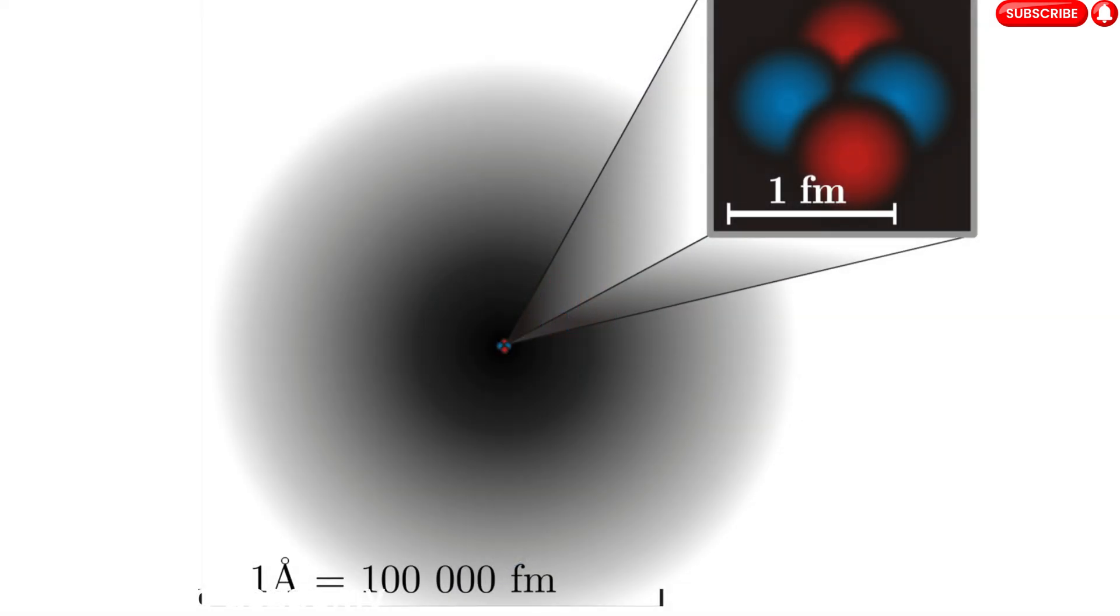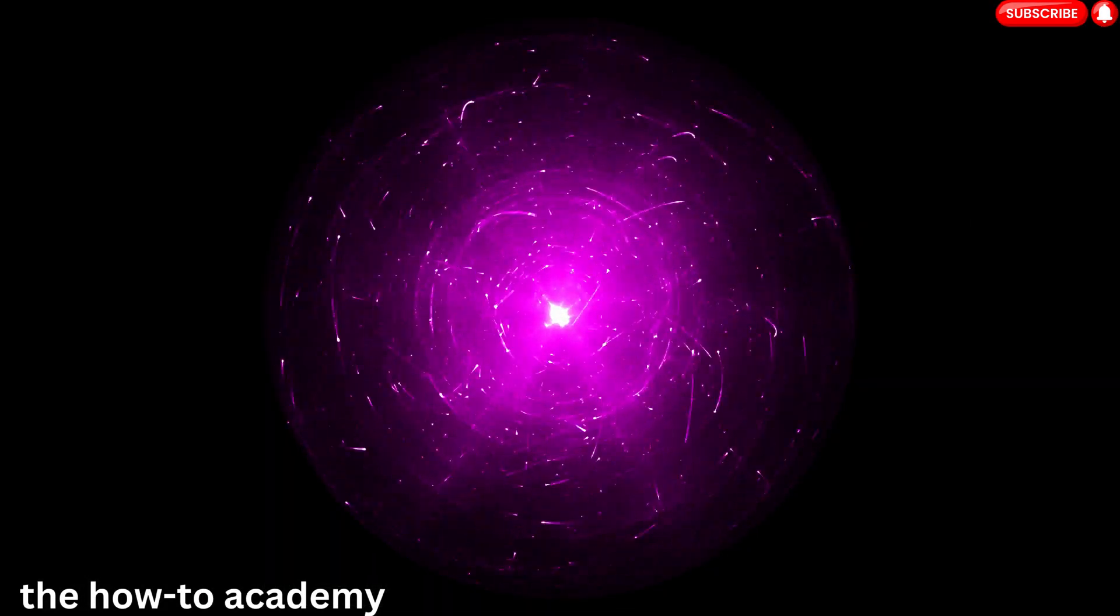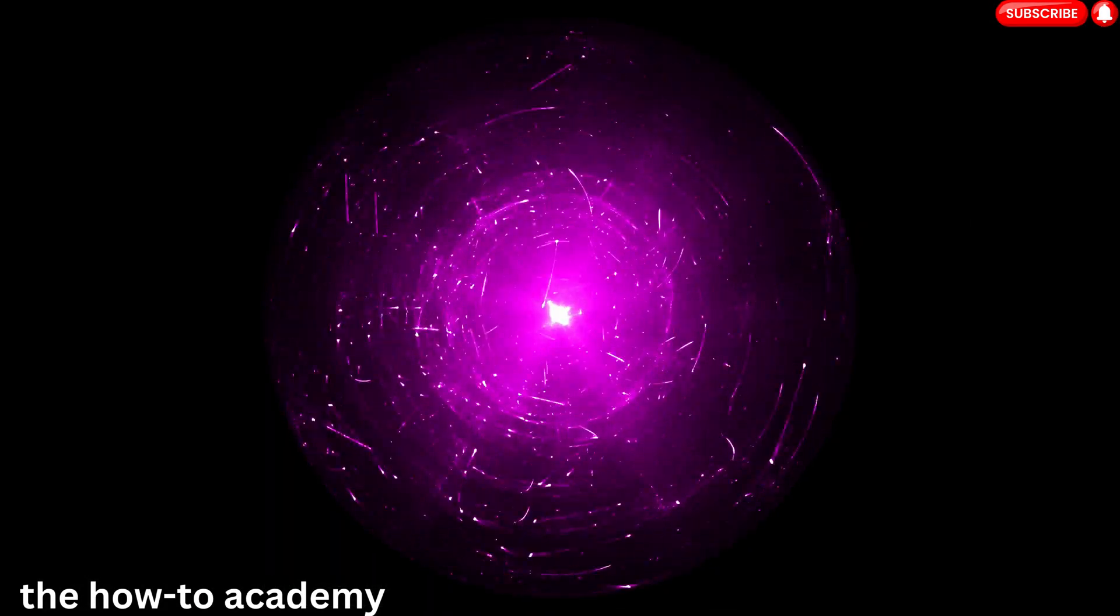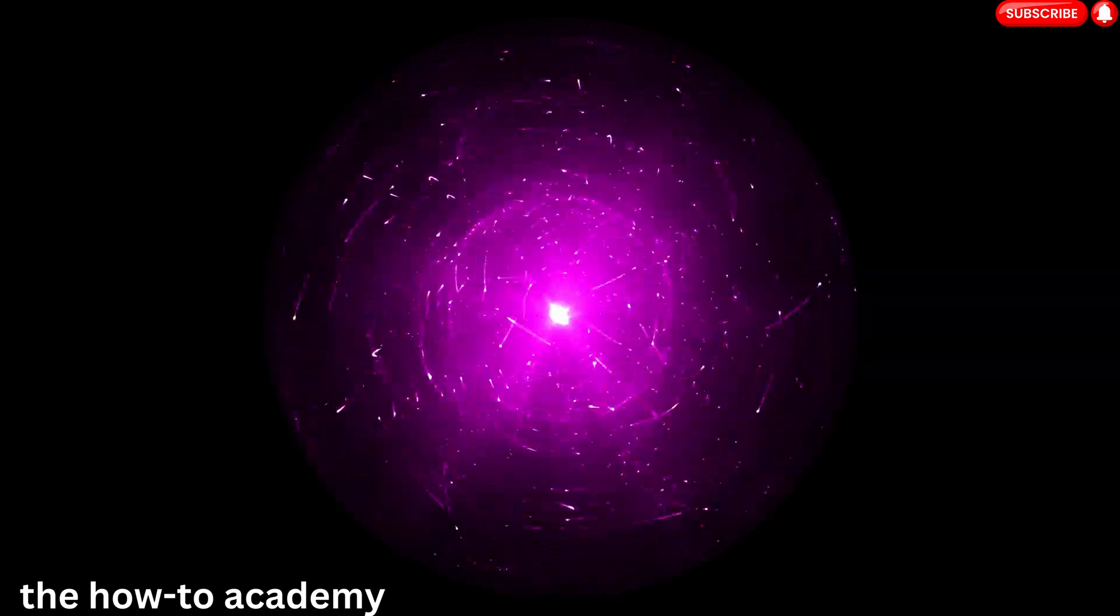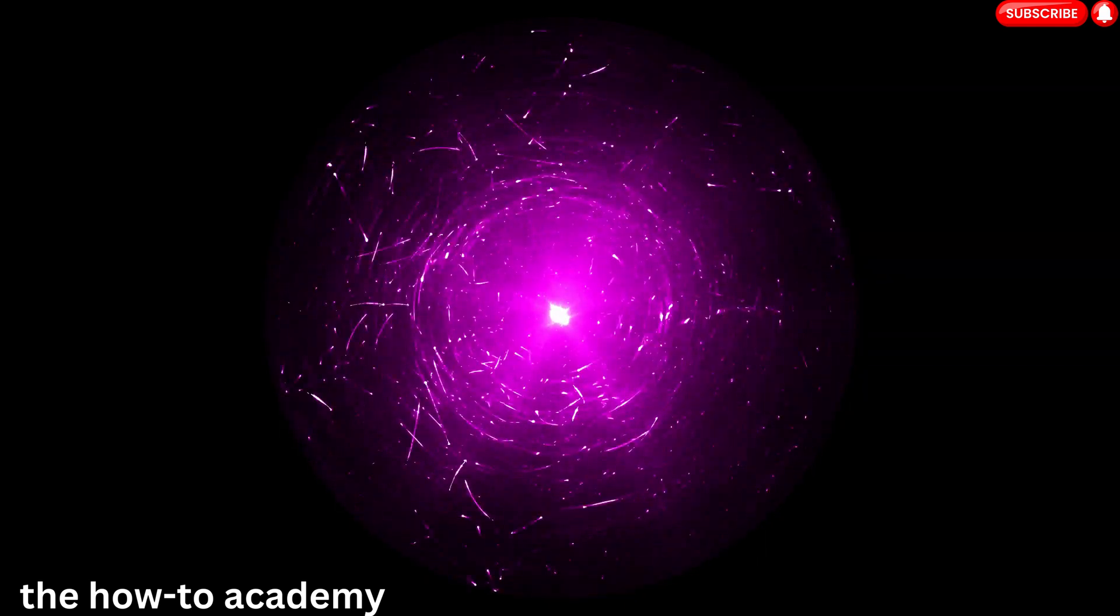The location of an electron within this cloud is not fixed. Electrons exist in a state of probability, meaning at any given time, they could be anywhere within that cloud. This strange reality is a key feature of quantum mechanics and one of the many quirks of the subatomic world.